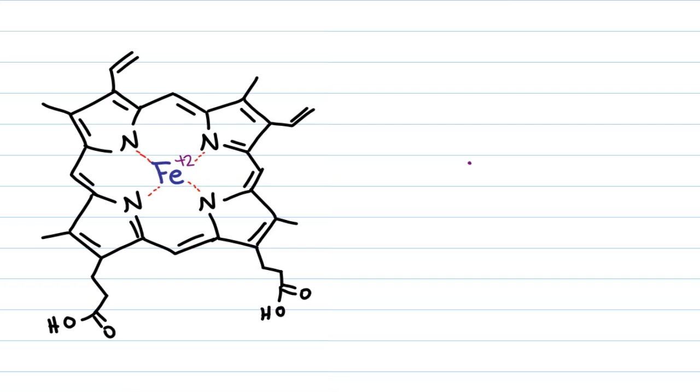Looking at this heme group, notice all the pi bonds that you have. This is an aromatic system. Remember that one of the characteristics of aromaticity is planar or flat but when this heme group does not have oxygen bound, it tends to look a little domed or puckered. So hemoglobin doesn't necessarily like binding oxygen and this is called the T state which stands for taut. It's so taut, it's so tight, it doesn't want to allow an oxygen into this group.